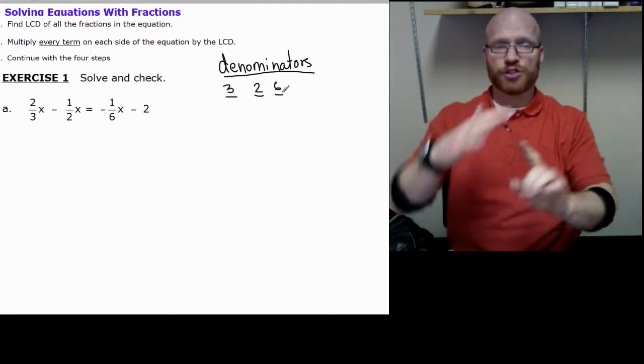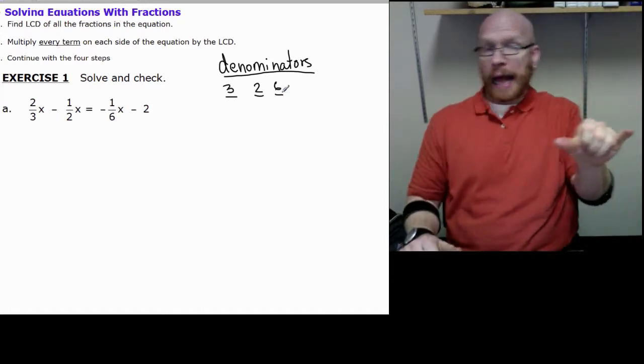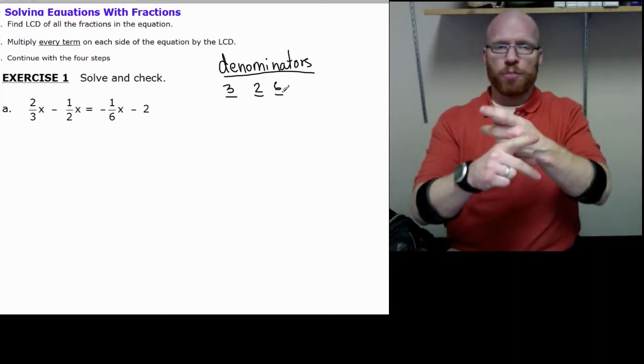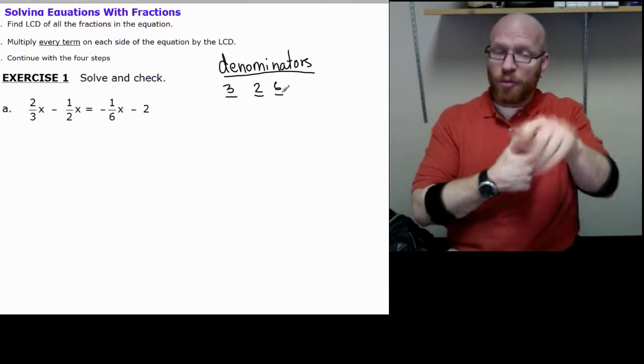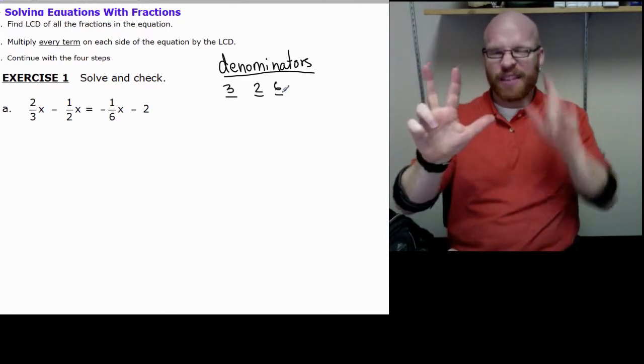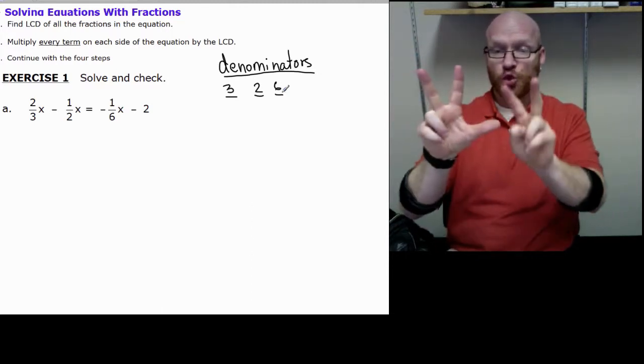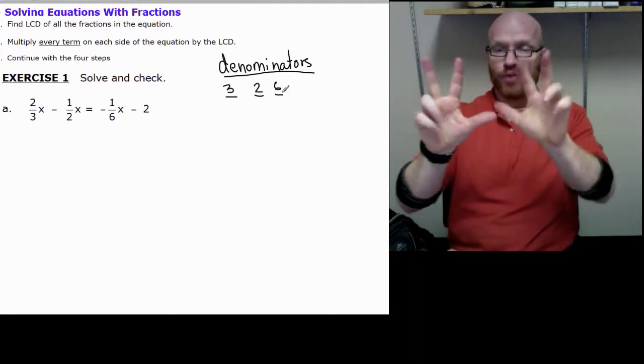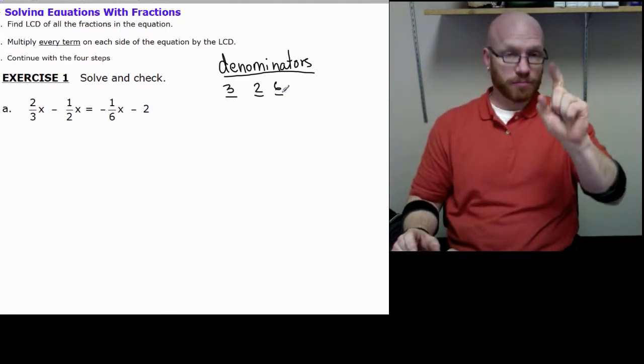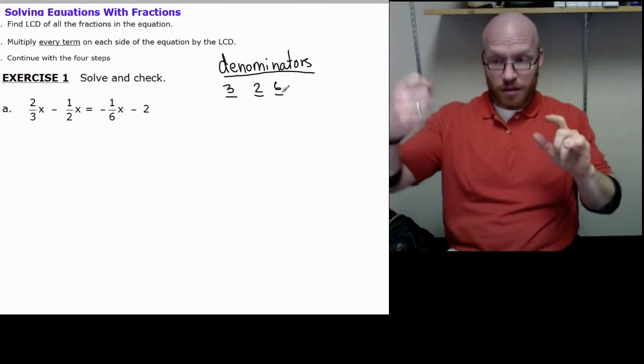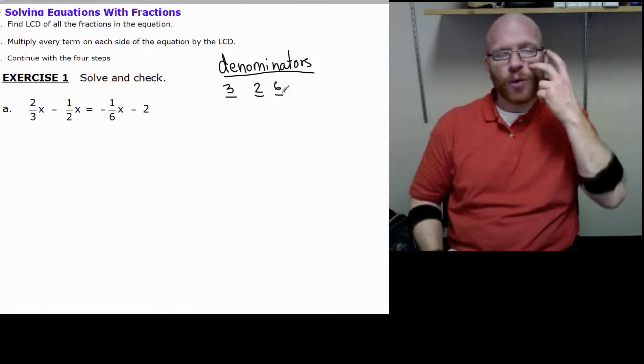Those three denominators need to find the smallest possible common multiple. Multiples, if you can remember, mean 3, for example: 3 times 1 is 3, times 2 is 6, times 3 is 9. Those are called multiples. We have for 3, 2, and 6, let's see what we find.